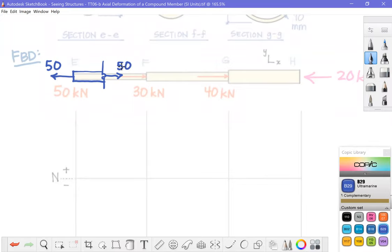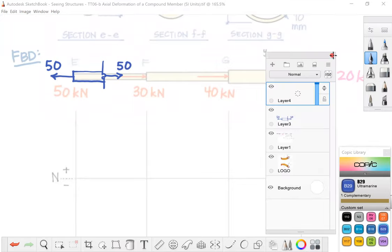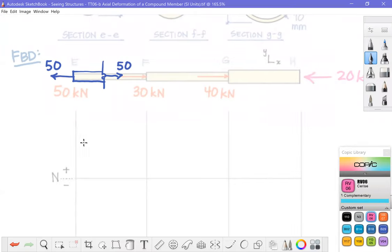Tension, of course, is positive. So I'll draw that right here. That's 50 kilonewtons of tension. Okay, next segment.